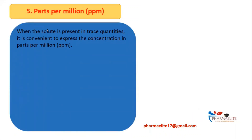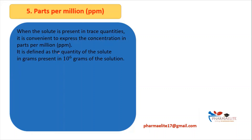When the solute is present in trace quantities, it is convenient to express the concentration in parts per million (ppm). For example, if a percent mass by volume of a solution comes to 0.00006%, it is better to write it in terms of parts per million — it will directly be 6 ppm. It is defined as the quantity of solute in grams present in 10⁶, that is, one million grams of solution.